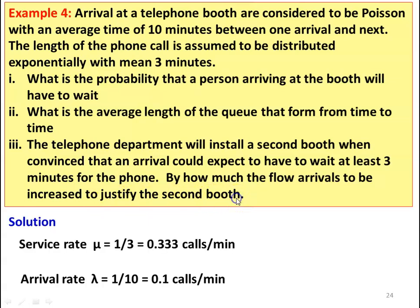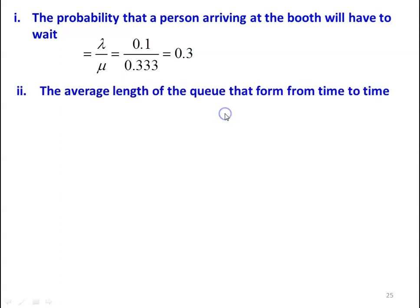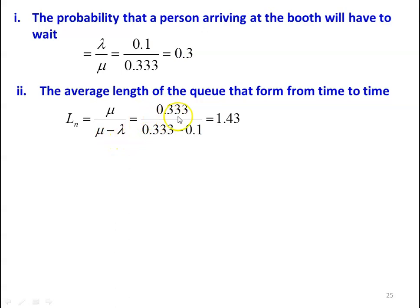The service rate is 3 minutes, so mu equals 1 divided by 3 equals 0.0333 calls per minute. The arrival rate lambda equals 1 divided by 10 equals 0.1 calls per minute, since every 10 minutes there is one arrival. The probability that a person arriving at the booth will have to wait equals lambda divided by mu, which is 0.1 divided by 0.333 equals 0.3. For the average length of the queue that forms from time to time, Ln equals mu divided by (mu minus lambda), which is 0.333 divided by (0.333 minus 0.1) equals 1.43.